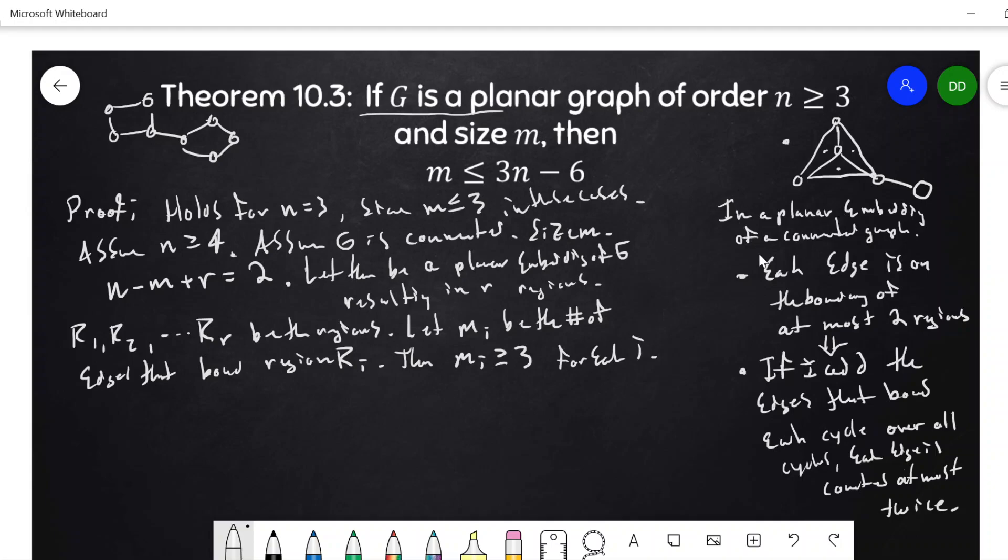And then we use this fact, each edge is on the boundary of at most two regions. So if I add up all the edges along each cycle, if I do this sum, sum of the little m sub i's from i equals one to r, then this will be at most two times the number of edges.